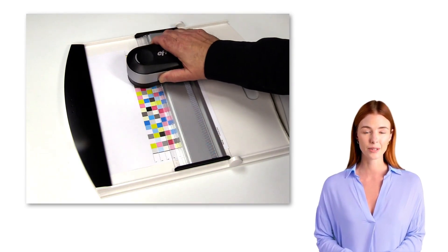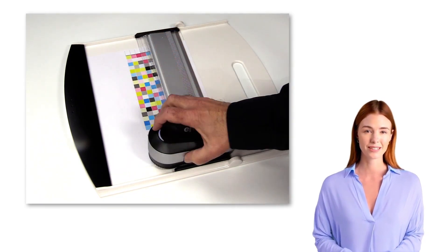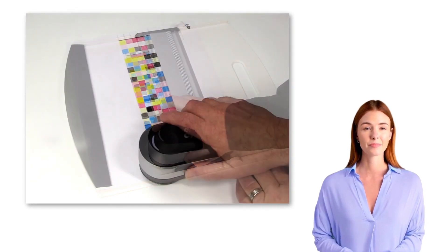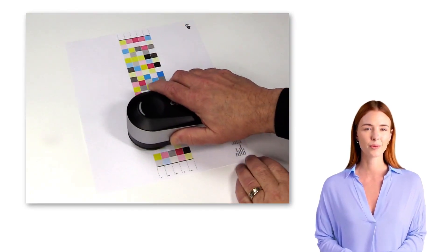Other errors include releasing the button on the side of the instrument before you reach the end of the row; rocking the instrument as you move it across the row; pressing down too hard on top of the instrument; or attempting to measure without using the ruler.